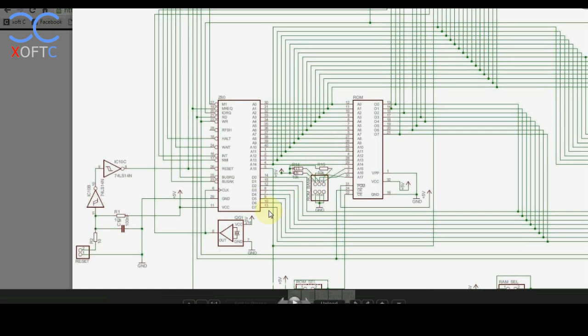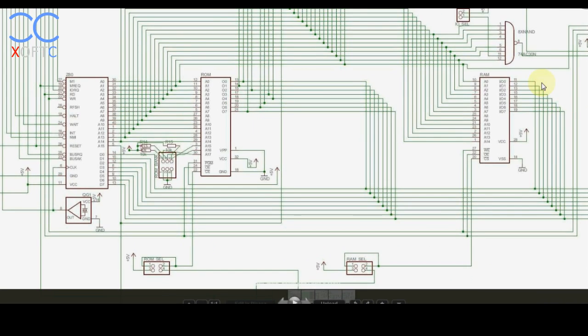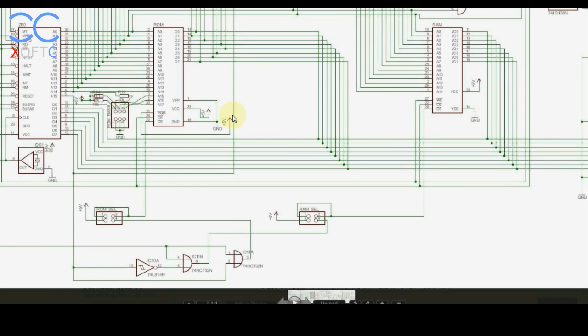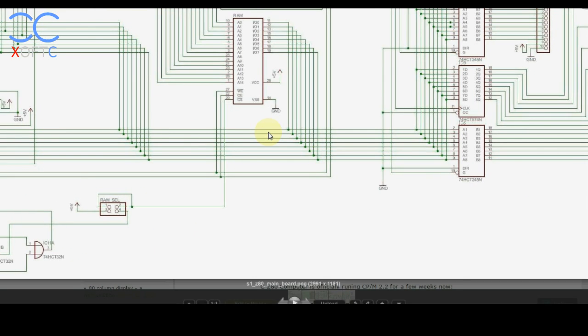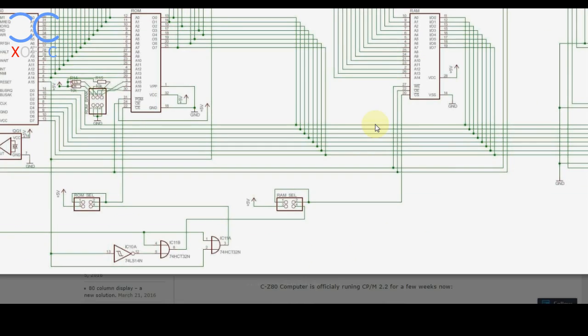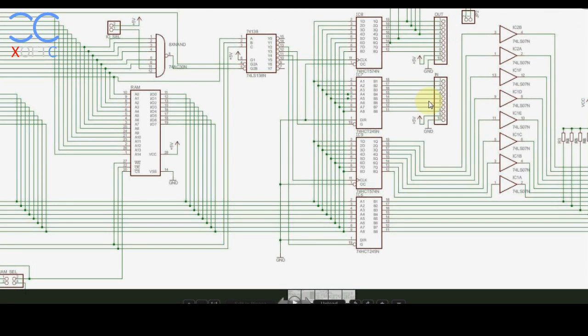Here we have the data bus where we feed in our 8-bit command that you saw, the no operation command, the ROM chip, the RAM chip. You can see here the data bus, the bus configuration the way it's set, and where we have the inputs. The inputs come from the ROM and from the RAM, and they also come from the input-output serial connection and the keyboard.